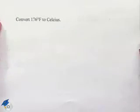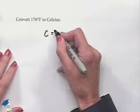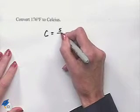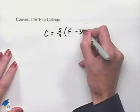Here's another problem dealing with temperature conversion. Convert 176 degrees Fahrenheit to Celsius. The formula that we'll use is C equals 5 ninths multiplied times F minus 32.